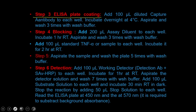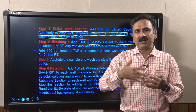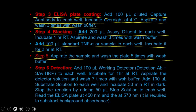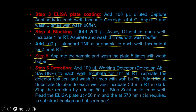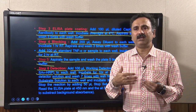Step 3: coating — add 100 µL of diluted capture antibody to each well, incubate overnight at 4°C, then aspirate and wash 3 times with wash buffer. Then perform blocking to prevent non-specific antigen binding to the plastic. Step 4: add 100 µL of TNF-alpha standard or sample and incubate for 2 hours at room temperature. Step 5: aspirate and wash the plate 5 times, then add 100 µL of detector (streptavidin-HRP conjugate) to each well and incubate for 1 hour at room temperature.